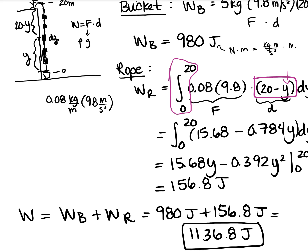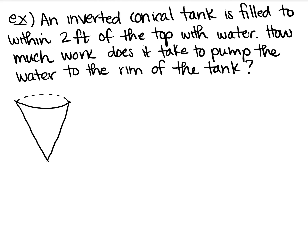One more example: a pumping problem. We have an inverted conical tank. The density of water is 1,000 kilograms per meter cubed, and we multiply by 9.8 meters per second squared for gravity. You can also do these problems in the English system with pounds, where gravity is already built in and you don't need the 9.8. Right now we're working in the metric system.